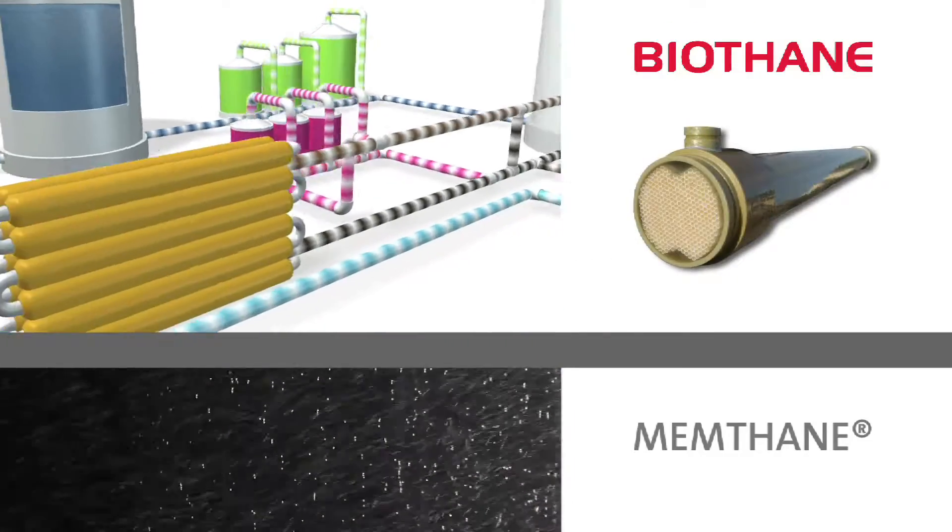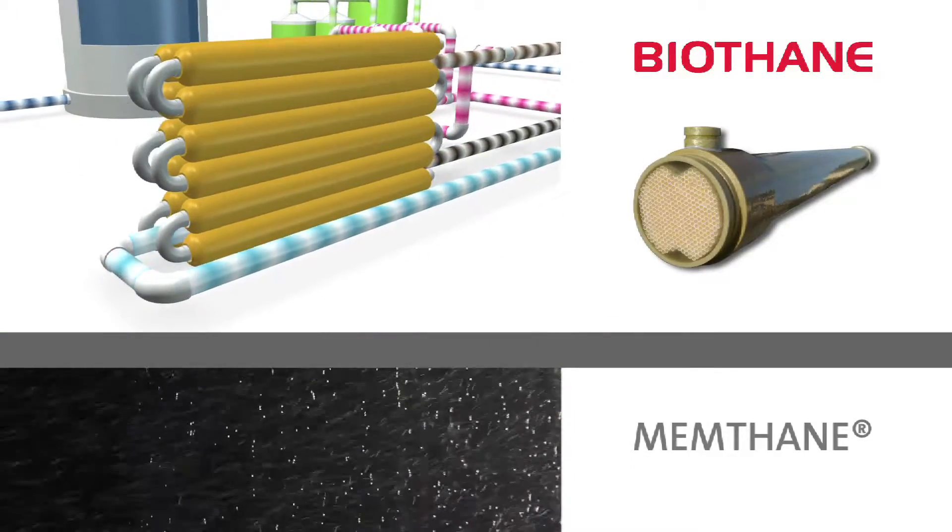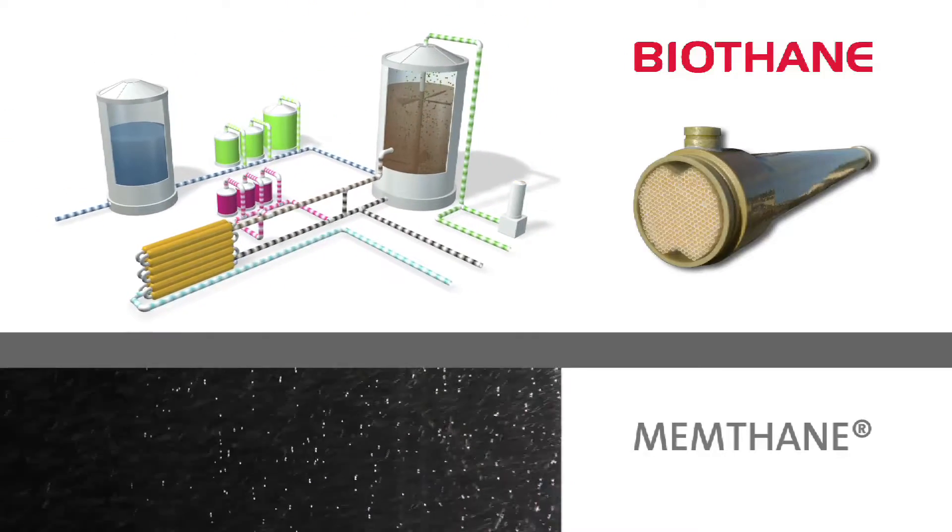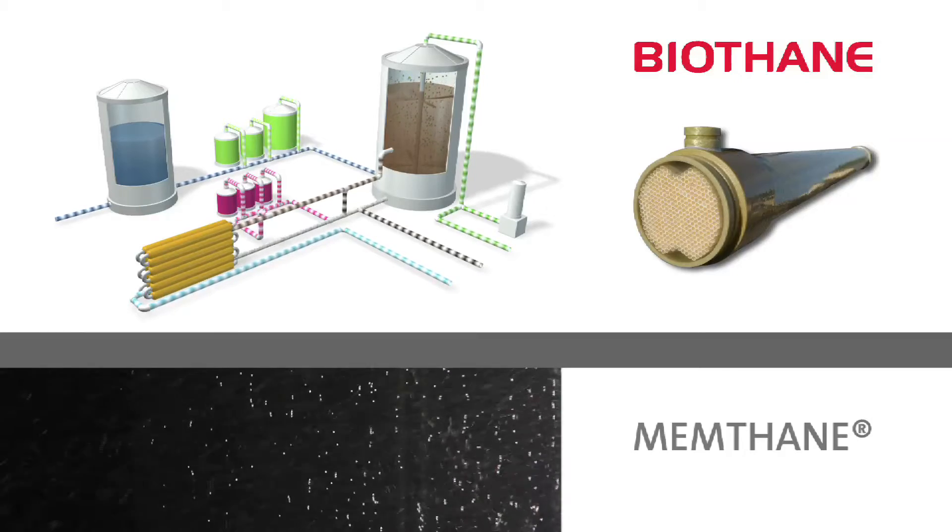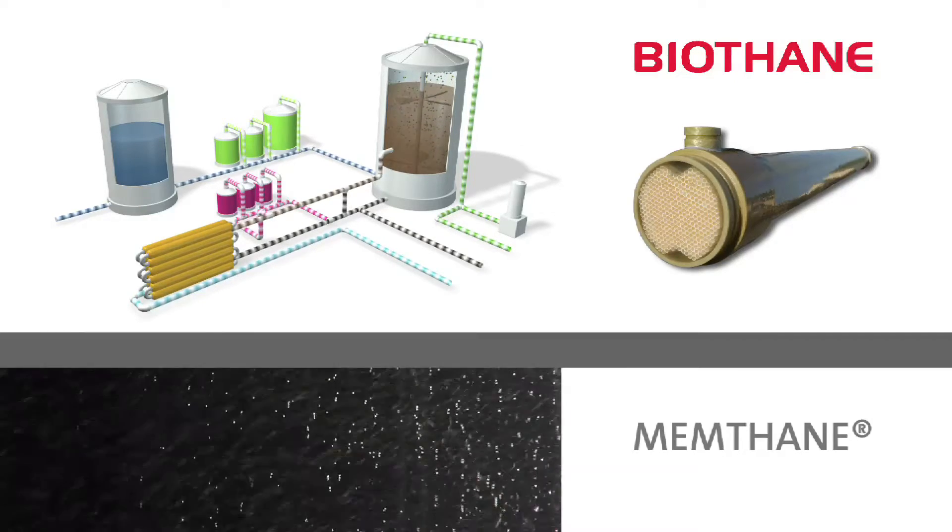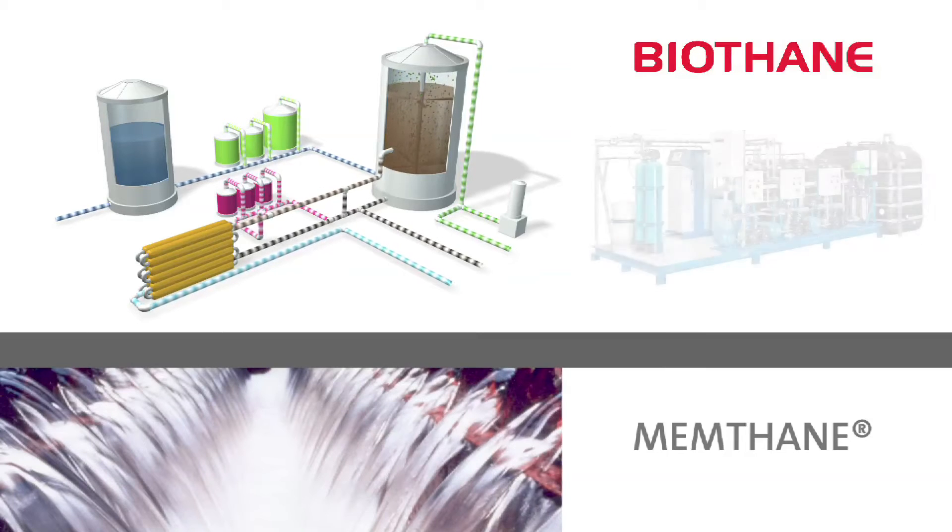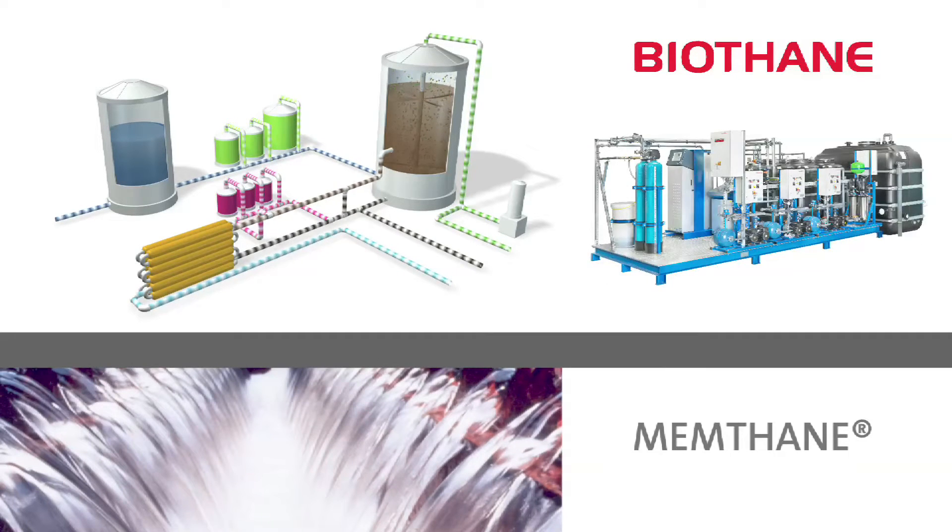The reactor content is pumped to the ultrafiltration membrane skid where clear permeate or effluent is produced while the anaerobic biomass is retained and returned to the bioreactor. The crystal clear permeate does not contain any suspended solids.